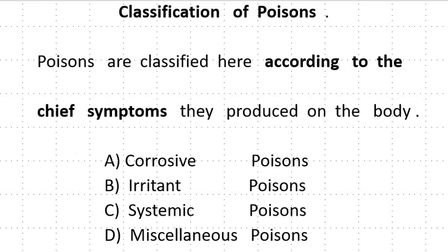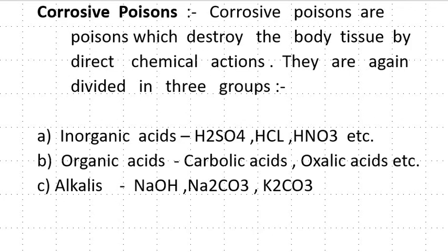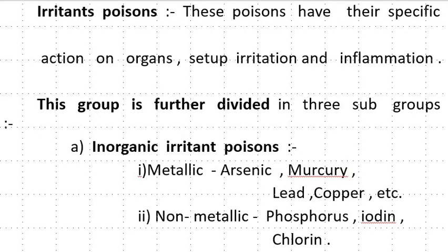Classification of Poison. Poisons are classified according to the chief symptoms they produce on the body. They are: 1st Corrosive Poison, 2nd Irritant Poison, 3rd Systemic Poison and 4th Miscellaneous Poison. Corrosive Poisons are poisons which destroy body tissue by direct chemical action. They are divided into 3 groups: Inorganic Acid, Organic Acid and Alkali. Inorganic Acids include Sulphuric Acid, Hydrochloric Acid and Nitric Acid. Organic Acids include Carbolic Acid, Oxalic Acid, and Alkali includes Sodium Hydroxide, Sodium Bicarbonate and Potassium Bicarbonate.